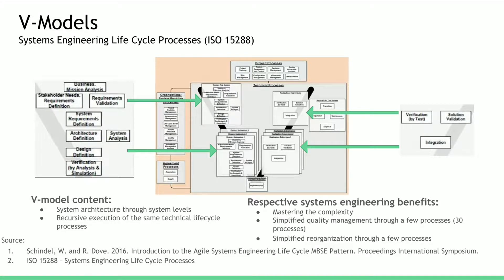If we take the concept of system levels with us, this representation will look like this in this picture. There are only 30 systems life cycle processes according to ISO 15288.